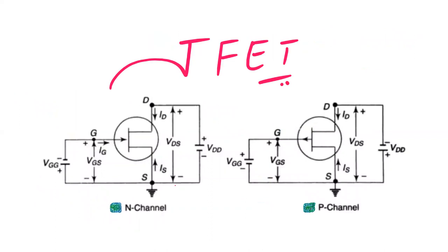For the JFET symbol in N-channel, the arrow mark points inward, because electrons travel from source to drain and conventional current flows in the opposite direction. For P-channel JFET, the arrow mark points outward, because holes travel from source to drain in that direction. These are the two symbols for N-channel and P-channel JFET.